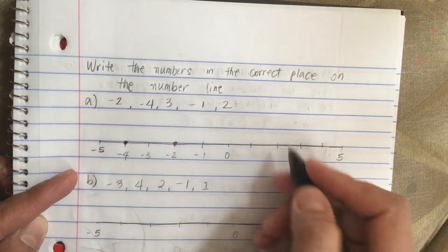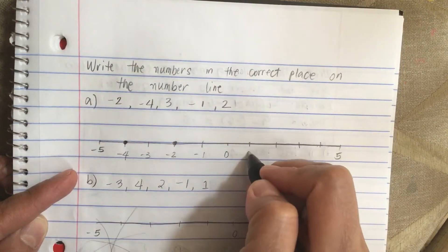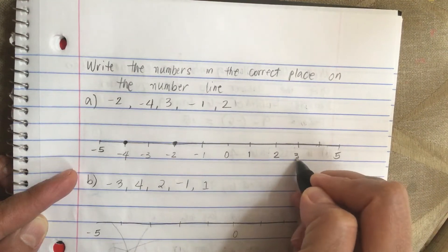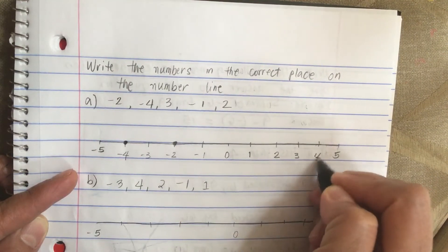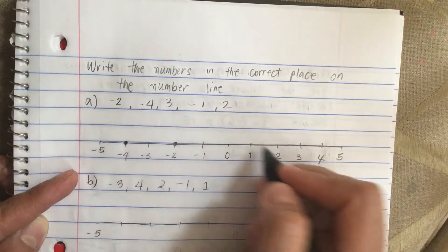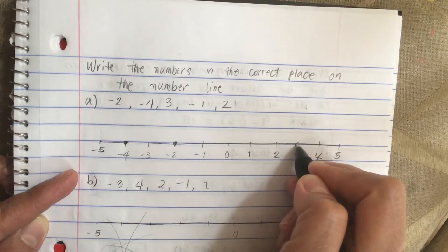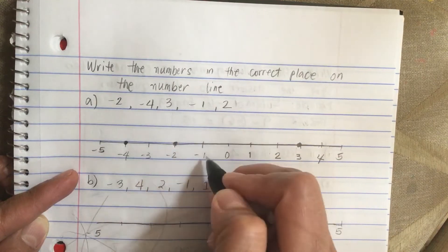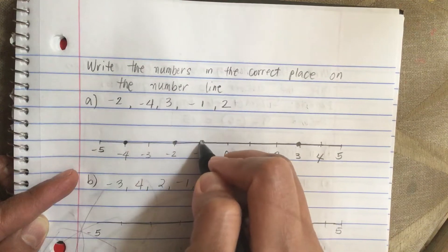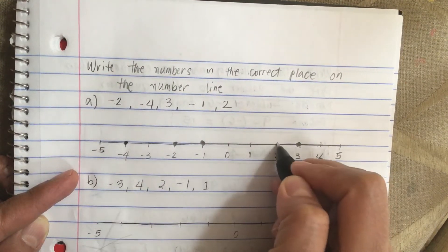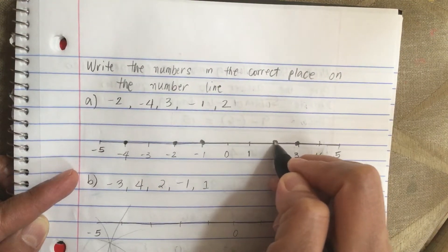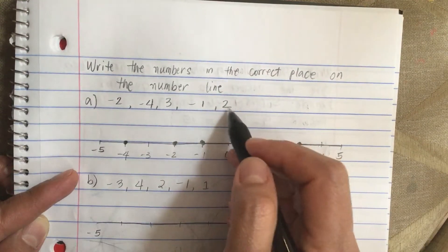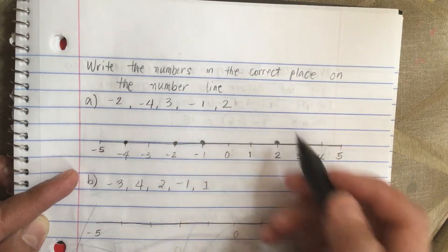And then 3 — let's label here, so 3 is here. And then minus 1. And then 2. So we label them and put them in the correct place.